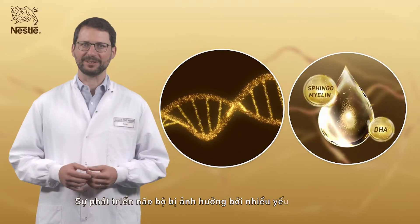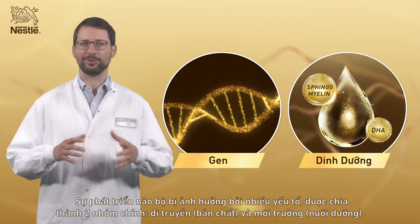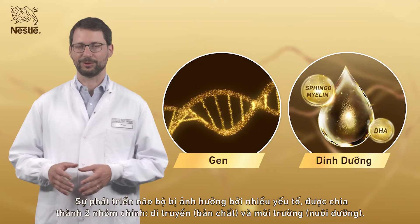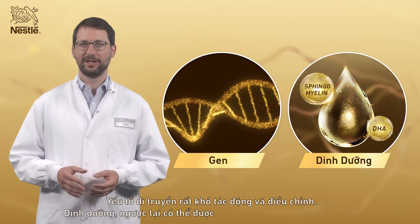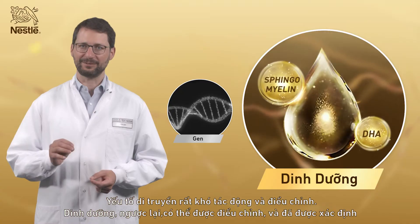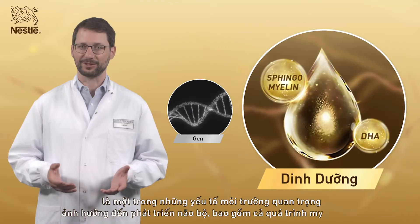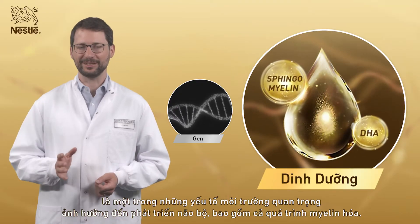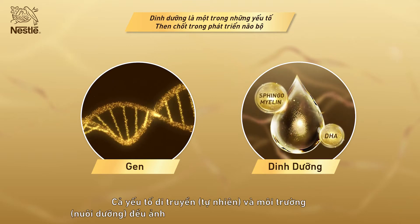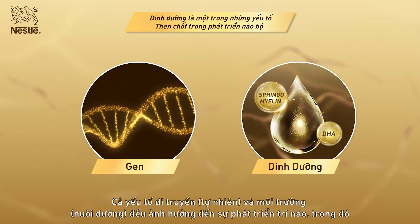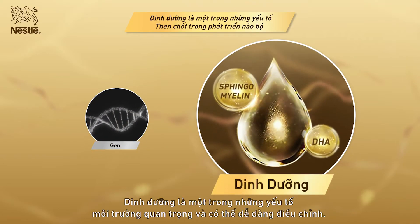Brain development is influenced by multiple factors that can be grouped as genetic, which we can also call nature, and environmental, which we can also call nurture. Genetic factors are difficult to modulate. Nutrition has been identified as one of the key environmental factors influencing brain development including myelination, and it can be relatively easily modulated. So in summary, both genetic nature and environmental nurture influence brain development, with nutrition being one of the key environmental factors and one of the easily modifiable.